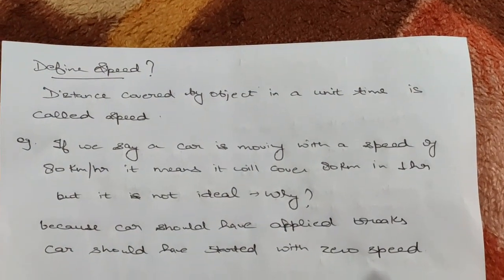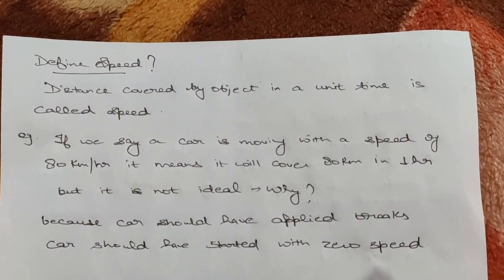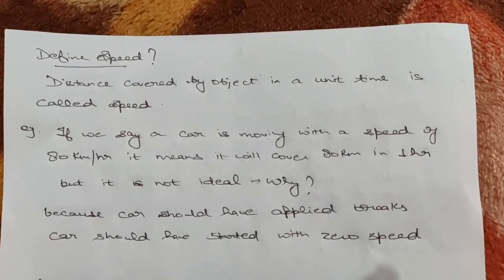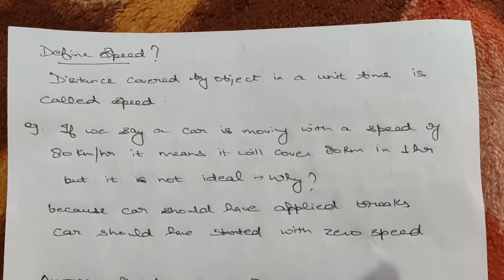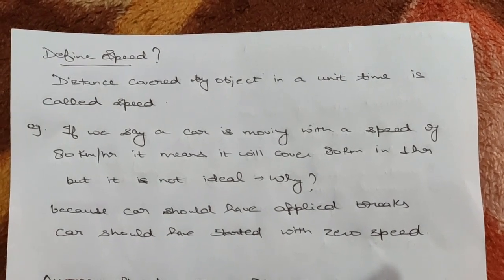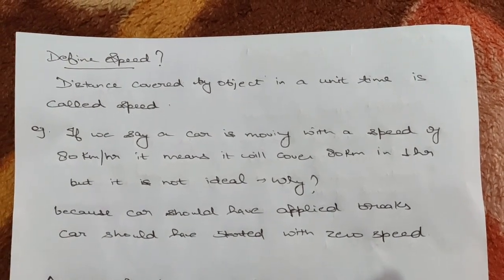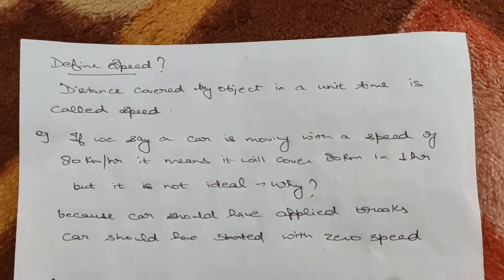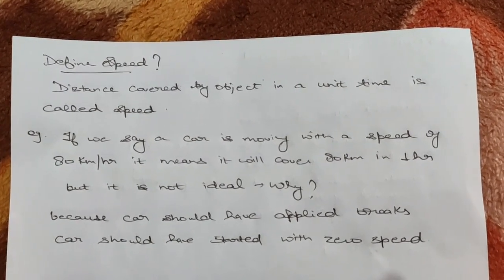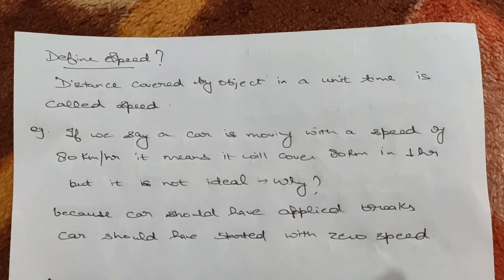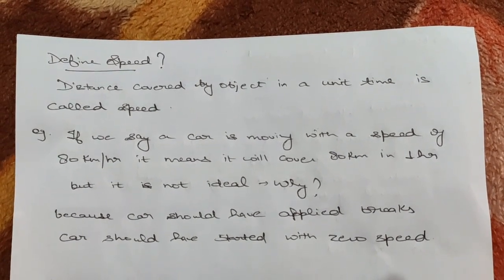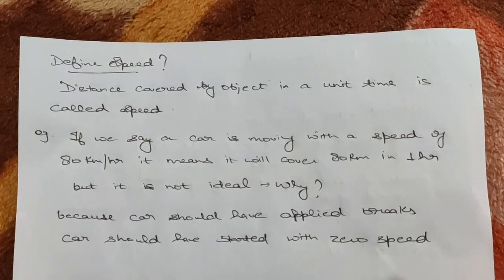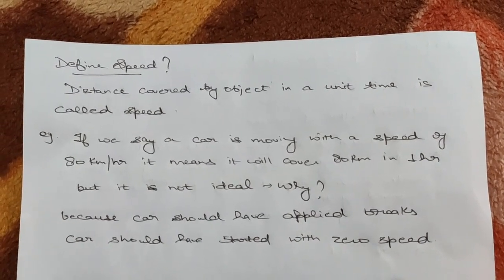The question arises: how do we define speed? Speed can be defined as the distance covered by an object in a unit time. For example, if we say a car is moving with a speed of 80 km per hour, it means the car will cover 80 km in one hour.